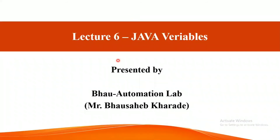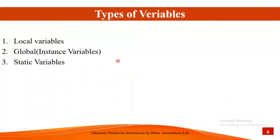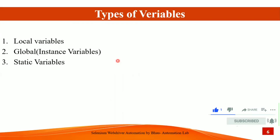Let's start with Java variables. In Java we have three types of variables: local variables, global variables, and static variables. Global variables can also be named as instance variables. We'll see practically what local variables, global variables, and static variables are.